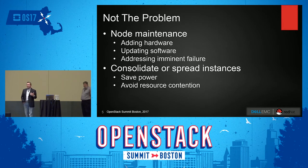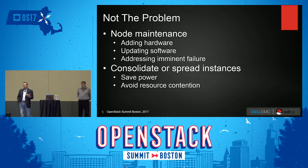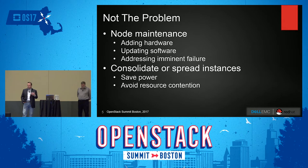Some of the things we're not going to talk about — because these are covered under some of the technologies we'll talk around, Nova and Compute — is node maintenance. This is where node availability is important but it's kind of controlled. You'll be adding hardware, updating software, addressing imminent failure, or the consolidation or spreading of instances for power conservation and avoiding resource contention.